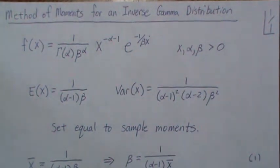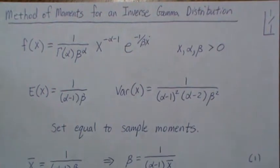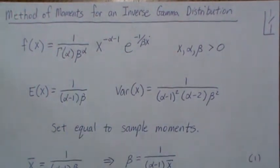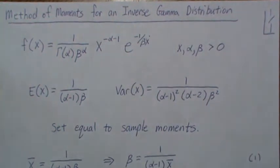In this video we derive the method of moments estimates for an inverse gamma distribution. What's interesting is in the next video we derive the maximum likelihood estimator for an inverse gamma distribution, and as an initial guess to our iterative process for finding those maximum likelihood estimates is this method of moments estimator. Here it's a closed form expression so it's very fast and does a relatively good job.